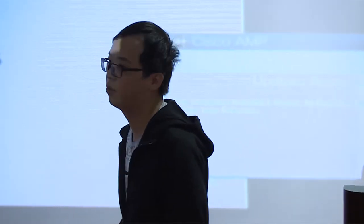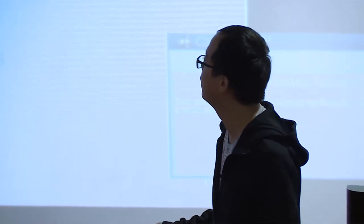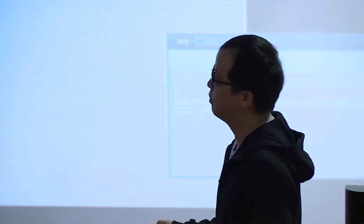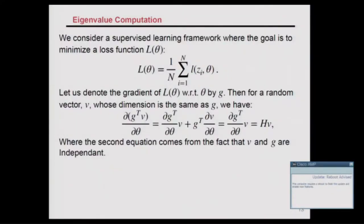Next, I'll talk about some background on Hessian computation of neural networks. For neural networks, theta is extremely large and the number of data points is extremely large. If you want to compute the Hessian or top eigenvalue of your model with respect to theta, it will be almost impossible — for example, it would be a 50 million by 50 million matrix.